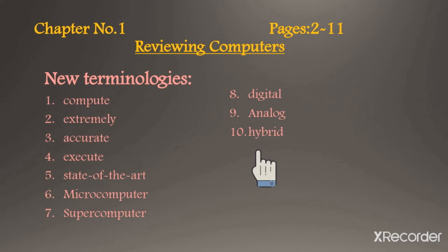Tenth: hybrid — hybrid means a mixture of two things; when two things are combined, the third thing invented is hybrid. Dear students, this was our previous lesson. I hope that you have seen this lesson very well, understood it, studied it, and written it in your copy.